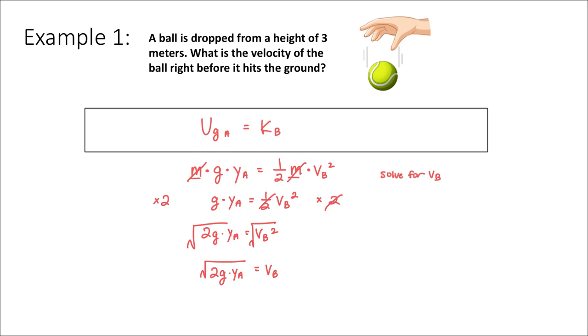So I can plug in my values here. That's going to be the square root of 2 times 9.8 times 3 meters, which was our y height. And that will be equal to about 7.7 meters per second.